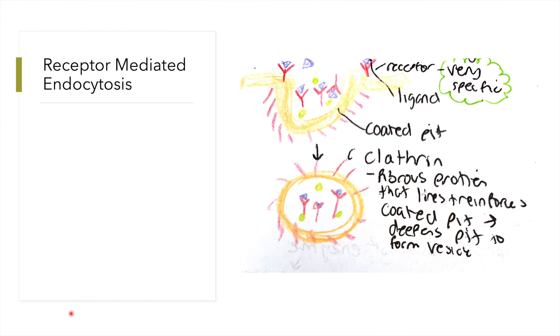Receptor-mediated endocytosis is a very specific process. First, an extracellular substance known as a ligand binds to a receptor outside the cell specific to it. Once the binding takes place, the plasma membrane begins to pinch inward, forming a coated pit holding the receptor and the ligand. Once it pinches off completely, a coated vesicle forms in a clathrin cage. Clathrin is a fibrous protein that deepens the pit of the vesicle and strengthens it.